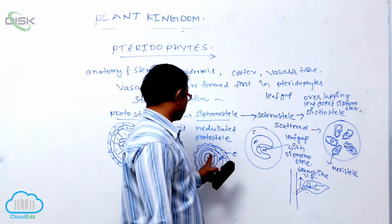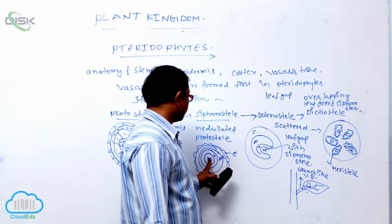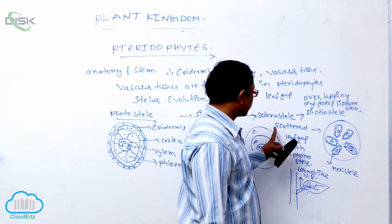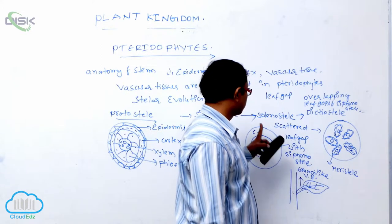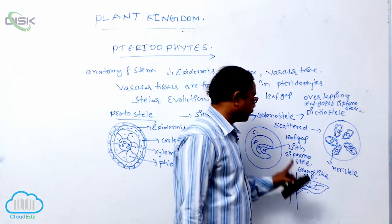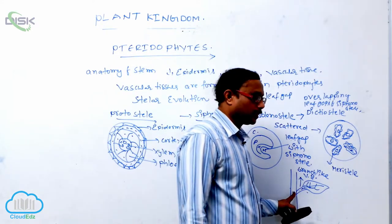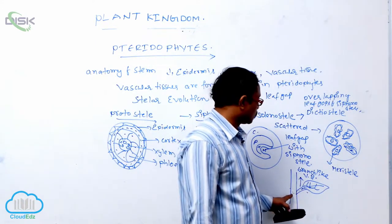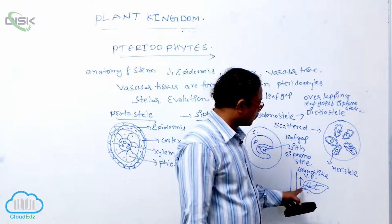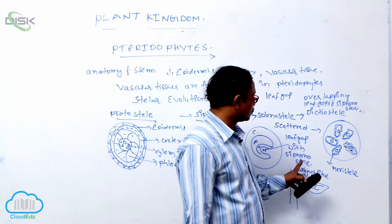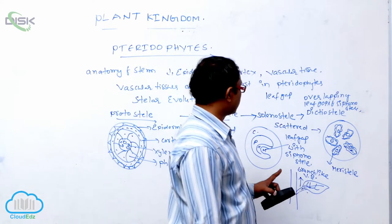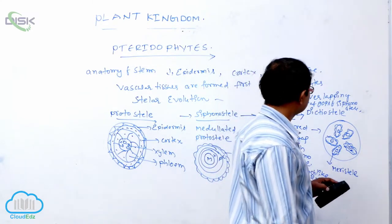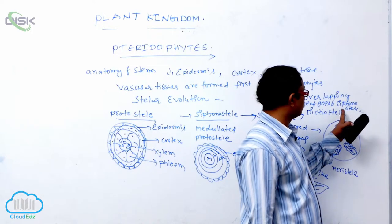At the center point, medullated protostele is known as the siphon of steel. After that, soleno steel — scattered leaf gaps with a siphon of steel — is known as soleno steel. The meaning of leaf gap: when the vascular bundles move from stem to leaf, they are divided into branches in the leaf, and those gaps are known as leaf gaps. Soleno steel is formed by the overlapping opening of leaf gaps in siphon of steel.